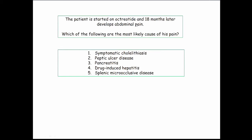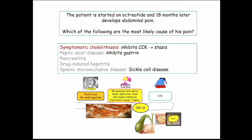18 months later, the patient develops abdominal pain. On somatostatin, what's the most likely cause? Options include gallstones, ulcer disease, pancreatitis, hepatitis, or splenic micro-occlusive disease. Somatostatin turns things off — it inhibits gastrin, turns off pancreatic secretions, making peptic ulcer disease less likely. The answer is symptomatic cholelithiasis. Why? Because somatostatin turns everything off, including cholecystokinin. From stasis, this patient develops gallstones as a complication of octreotide treatment.